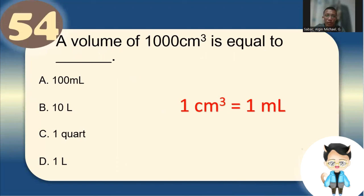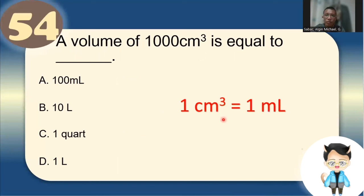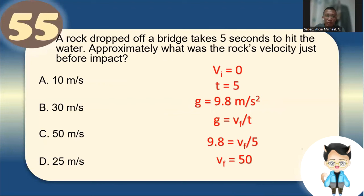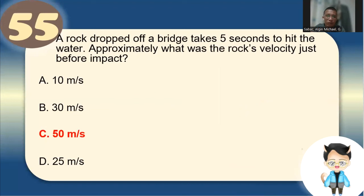Number 54: 1,000 cm³ is equal to 1 liter — 1 cm³ = 1 mL, so 1,000 mL = 1 liter. Number 55: A rock dropped from a bridge takes 5 seconds to hit the water. Initial velocity = 0, t = 5 s, g = 9.8 m/s². Final velocity = gt ≈ 50 m/s. The answer is letter C.